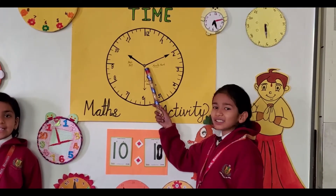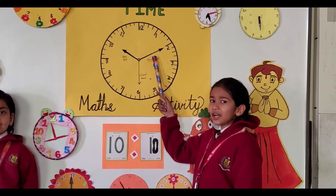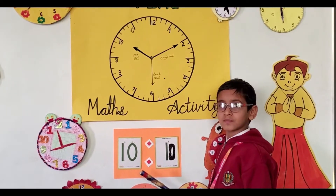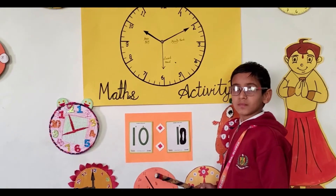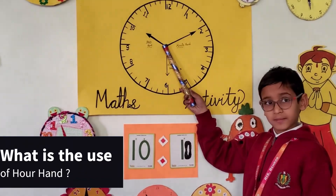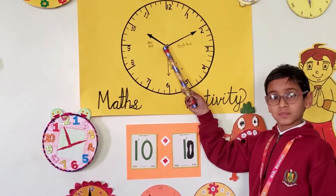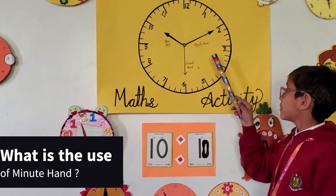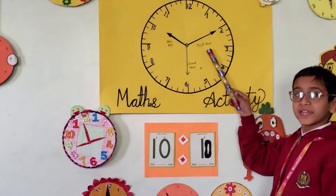Short hand is called hour hand. Long hand is called minute hand. Rudra, will you tell me what is the use of the hour hand? The hour hand tells us about the hours. And what is the use of the minute hand? The minute hand tells us about the minutes.